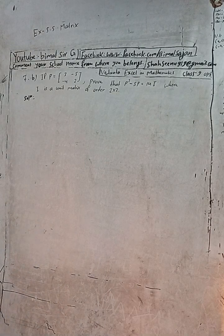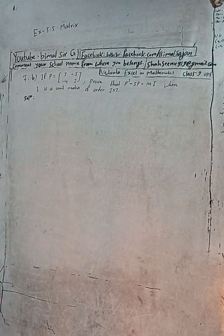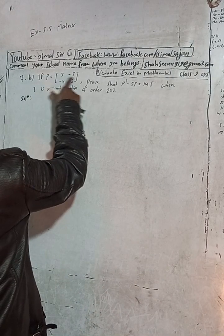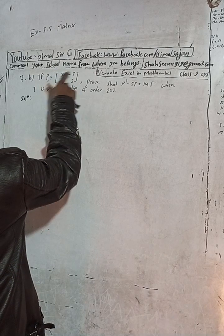Hi, Class 9 and 10 students, welcome back to Vimal Sarji YouTube channel. This is question number 7b, Exercise 5.5 — Matrix — from Vedanta Excel in Optional Mathematics Class 9. Check the playlist, and if you don't find any solutions, comment there. Now let's begin the solution.